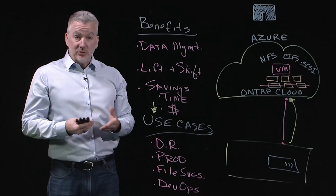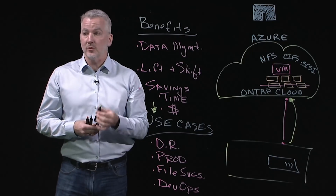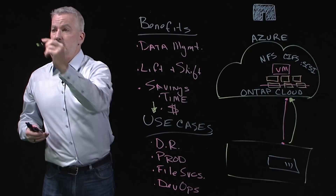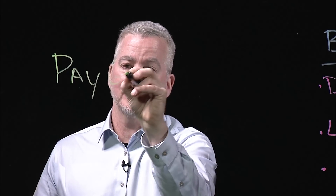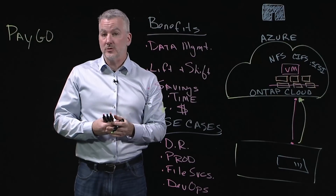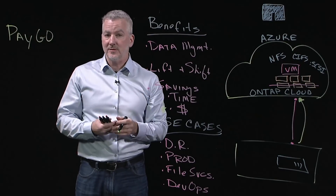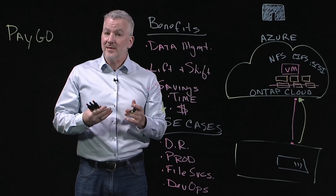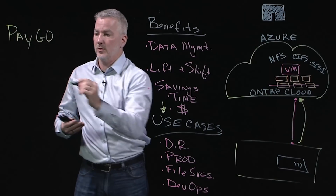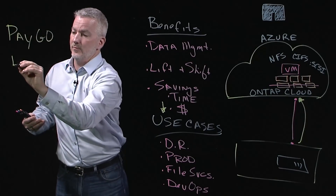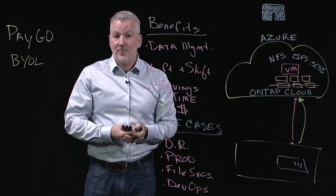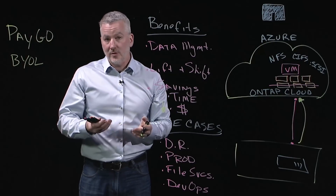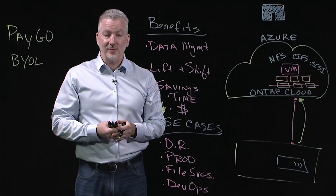If you're interested in consuming ONTAP Cloud yourself, there are two major consumption models. One is from the Azure Marketplace, where you sign up for pay-as-you-go options and agree to the terms and conditions for hourly charges. The other is a subscription-based model where you bring your own license, work with a NetApp rep or partner for that license, and simply apply it to the ONTAP Cloud system.